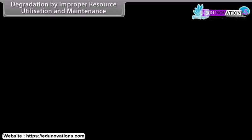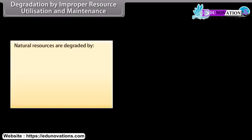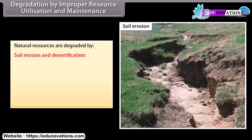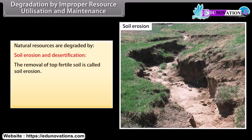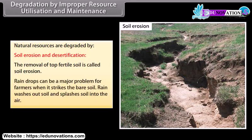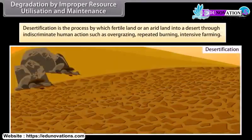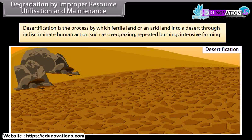Natural resources are degraded by soil erosion and desertification. The removal of top fertile soil is called soil erosion. Raindrops can be a major problem for farmers when they strike bare soil, washing and splashing soil into the air. Desertification is the process by which fertile or arid land turns into desert through indiscriminate human actions such as overgrazing, repeated burning, and intensive farming.